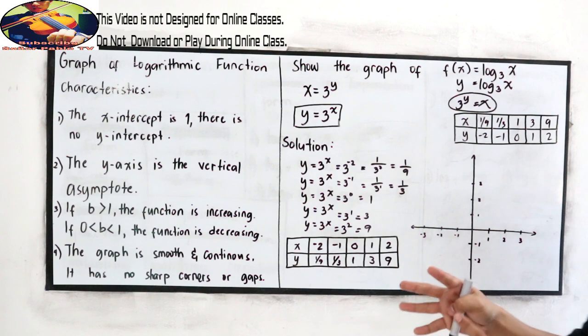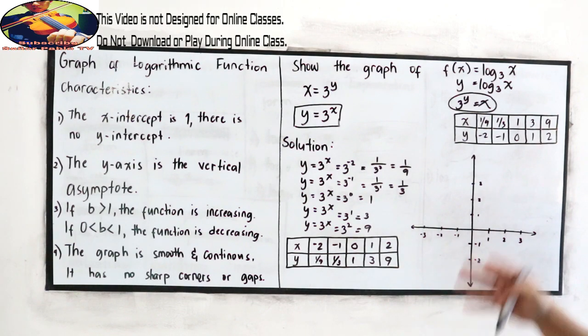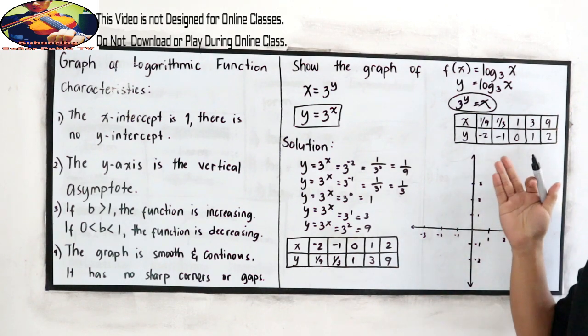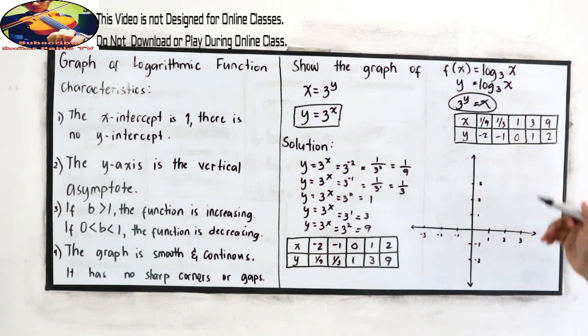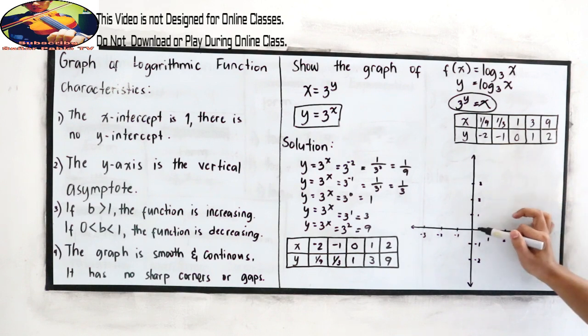So after interchanging, we're going to plot our table of values. So where is 1 over 9? 1 over 9 is on the x-axis. So this is our 1 half.